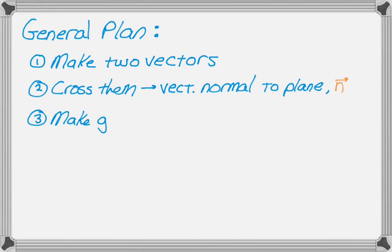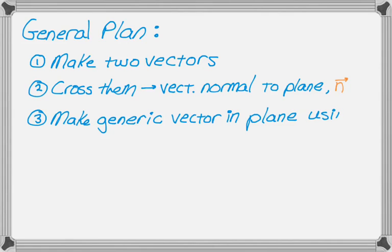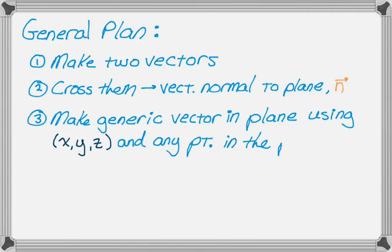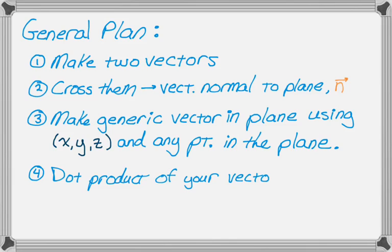And then we're going to make a generic vector in the plane. We'll do that by using the point (x, y, z) and literally any other point in the plane. That'll give us our generic vector. And then we will use the fact that the cross product is orthogonal to the plane, which means that the dot product of your generic vector and the cross product is going to be 0. And that's how you get the equation.